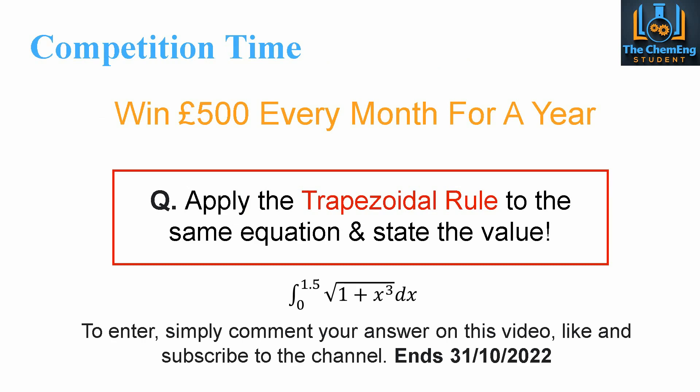Now, our competition for October is to win £500 every month for an entire year. So, all you have to do is answer this simple question. So, apply the trapezoidal rule to the same equation that we did in the Simpsons rule example. So, that's this equation here. So, if you apply the trapezoidal rule, and all you have to do is comment your answer to this video. So, to enter the competition, you must comment your answer to the video, like and subscribe to the channel, and then make sure that you are also subscribed to our Facebook page, because that's where the winner will be announced on the 5th of November.